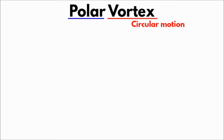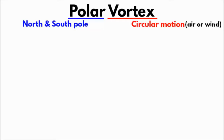The other word is polar, which means anything related to the North and South Pole. So what we understand from the term polar vortex is that there is a circular movement of air or wind occurring on both the Earth's poles, i.e. North Pole and the South Pole.